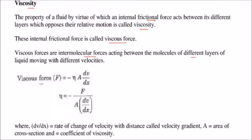Viscous force F is given by minus eta A dV by dx. Eta is equal to force by A and dV by dx. This is the rate of change of velocity with respect to distance which is also known as velocity gradient. A is the area of cross-section and this is the coefficient of viscosity.